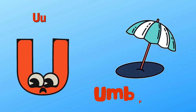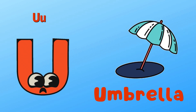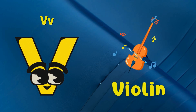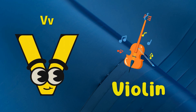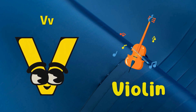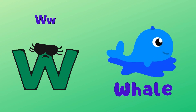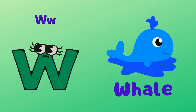U is for Umbrella. U-U-Umbrella. V is for Violin. V-V-Violin. W is for Whale. W-W-Whale.